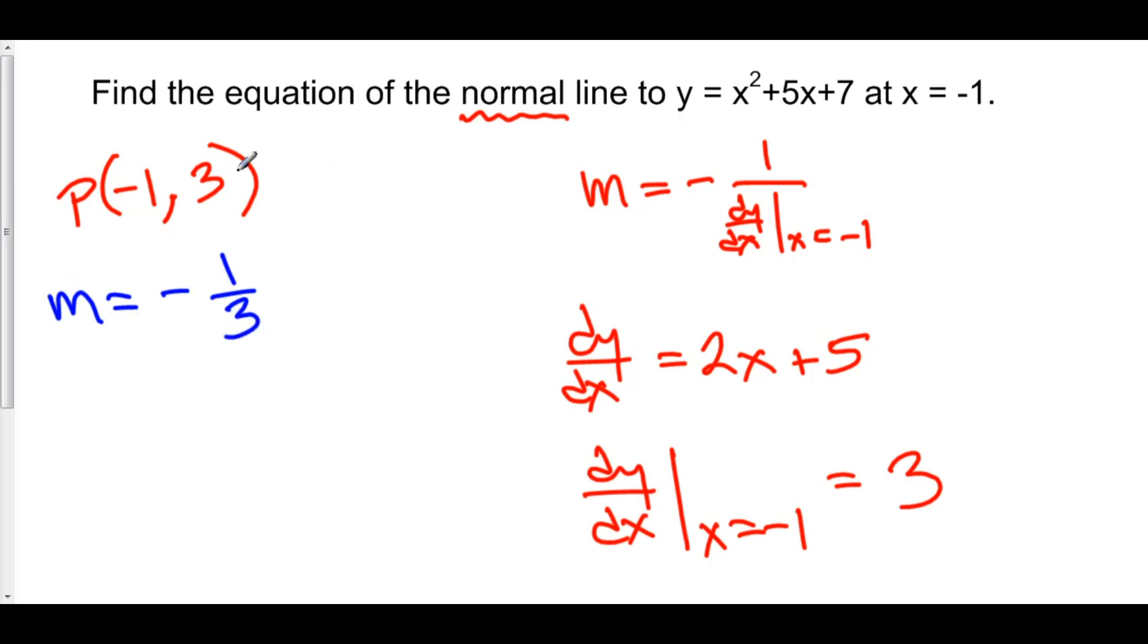We've got our point. We've got our slope. Let's put this into point-slope form: y - y₁ = m(x - x₁). This right here is the equation of the normal line to y = x² + 5x + 7 at x = -1.